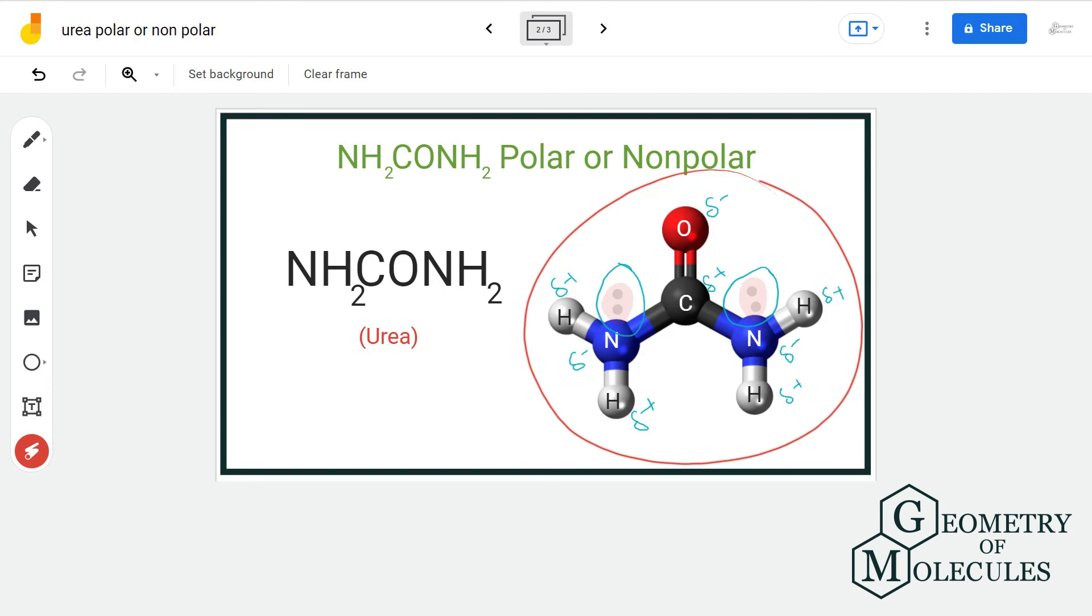This dipole moment won't get cancelled or nullified in any way. Thus we can conclude that urea is a polar molecule. Apart from that, urea easily dissolves in water, and that is because water and urea both are polar in nature, and only polar compounds can dissolve in polar solvents.